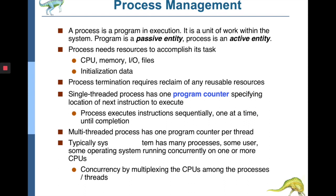When a process is executing, it needs resources to accomplish its task — it requires CPU, memory for storage, I/O interface for inputting and outputting data, files to store data, and initialization data. Whenever a process is running, it acquires all those resources needed for its execution. After termination, these resources can be reclaimed by the operating system to be allocated to another process. Concurrently running multiple processes through multi-programming or multitasking is part of process management.